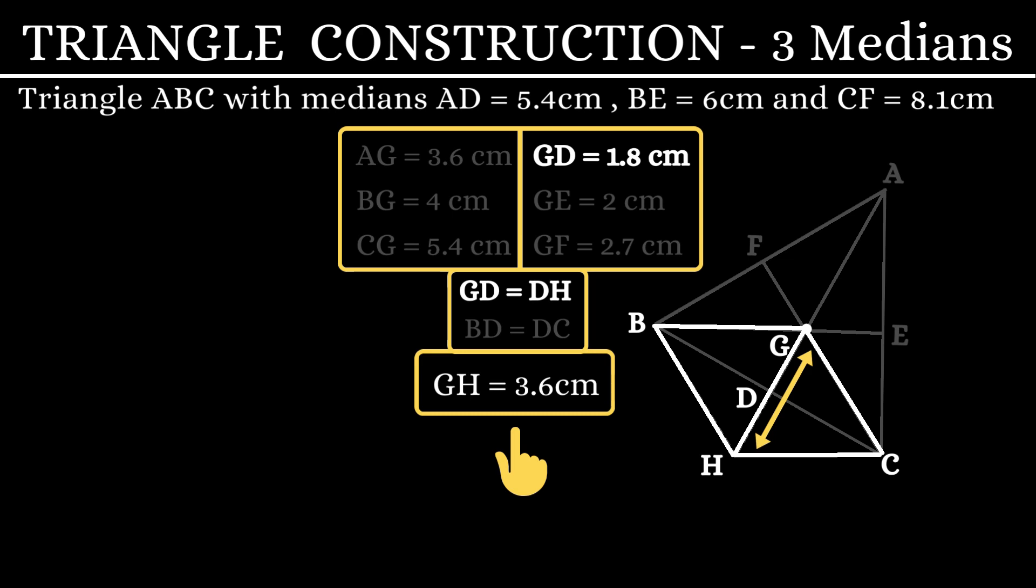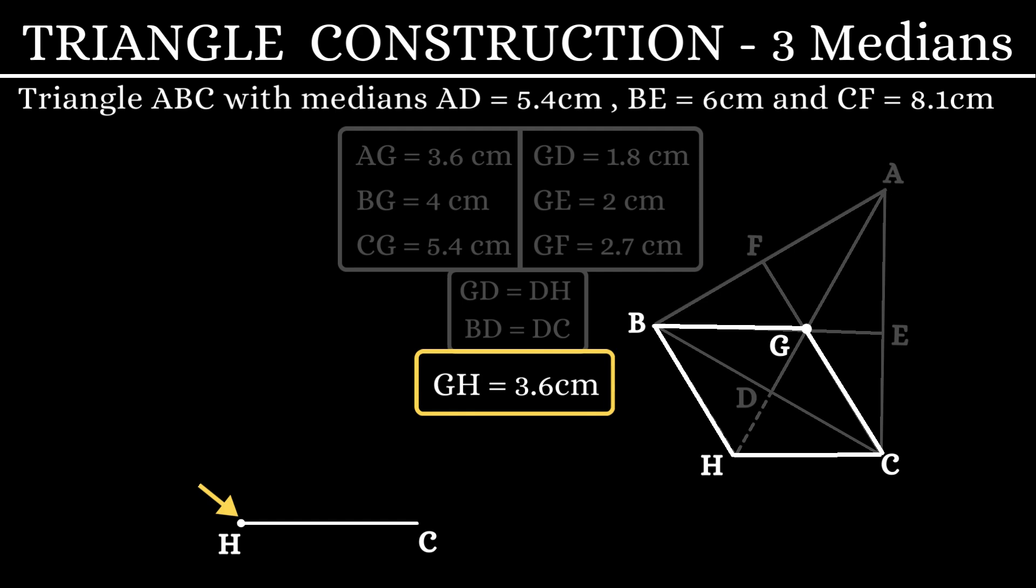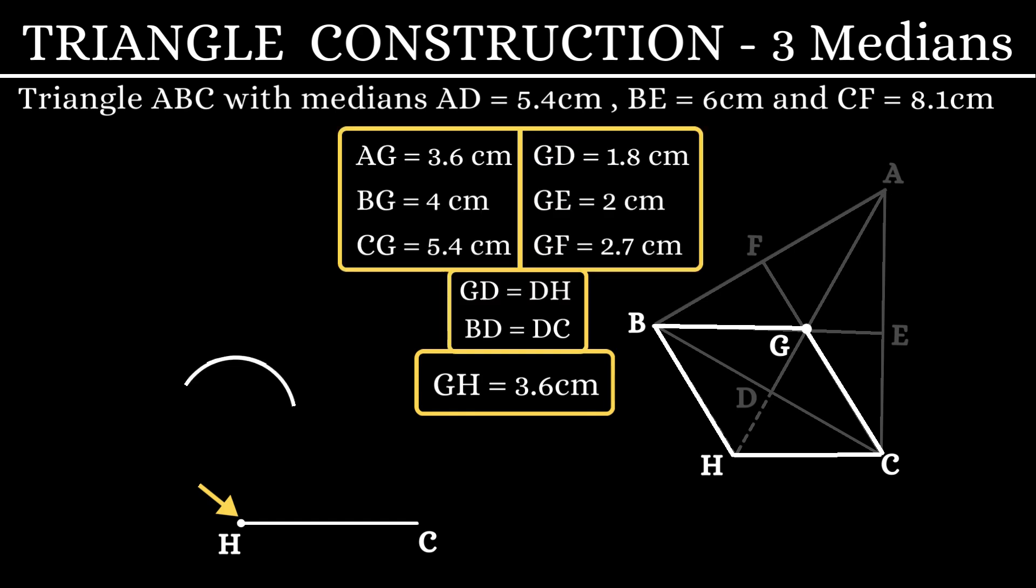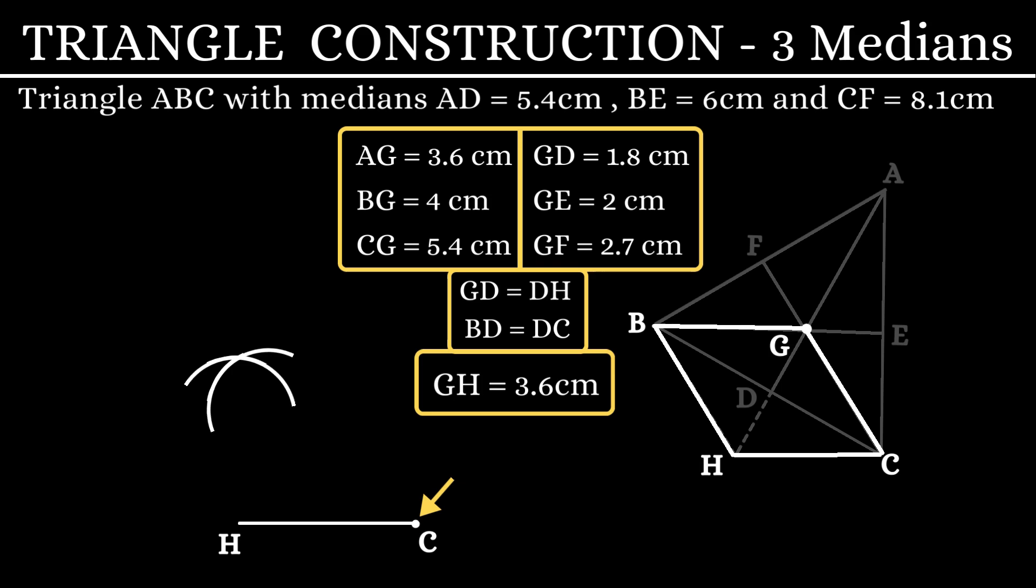Let us construct the parallelogram first. Draw a line segment HC of length 4 cm. With H as the center and a radius of 3.6 cm, draw an arc here. With C as the center and a radius of 5.4 cm, draw an arc which cuts the previous arc at point G. Let us join CG and HG.